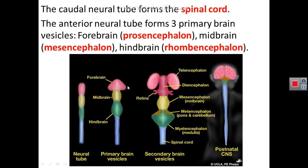The forebrain, the prosencephalon, will form a bilateral outpocketing called telencephalon, which will form the cerebral hemispheres. The cavity of the telencephalon becomes the lateral ventricles — one in each hemisphere. The other part derived from the prosencephalon is the diencephalon, which forms structures such as the thalamus, hypothalamus, subthalamus, epithalamus, and metathalamus.